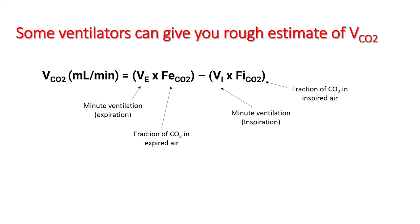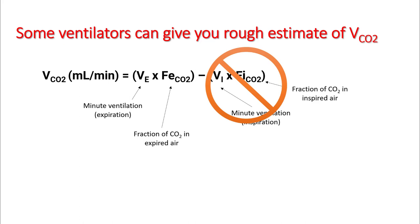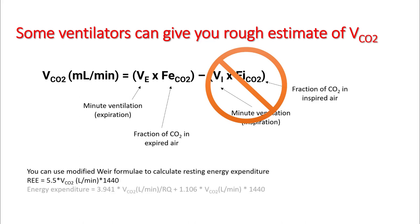Some ventilators can give a rough estimate of VCO2 by calculating minute ventilation multiplied by the fraction of CO2 expired by the patient. For more accuracy, subtract the inspired CO2 component, though usually this second term is minimal and can be ignored. So VCO2 equals minute ventilation multiplied by FeCO2. Using VCO2, you can calculate resting energy expenditure using the modified Weir formula.